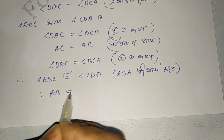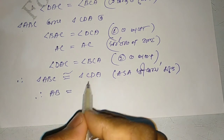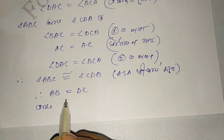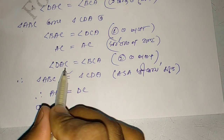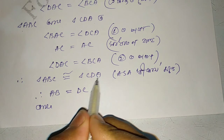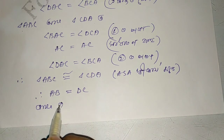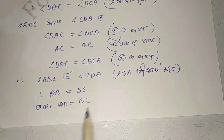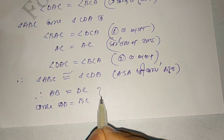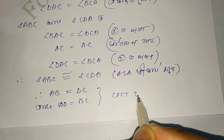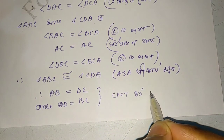BC AB equal to CD, DC. BC equal to AD, AD equal to BC. From CPCT.